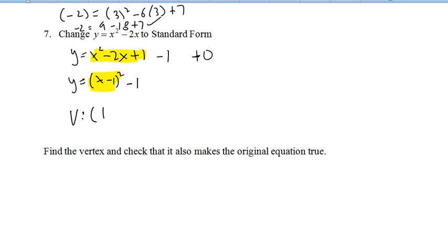So our vertex is going to be 1, negative 1. And then throw that into the equation, our original, to make sure that it also makes our original true is true.